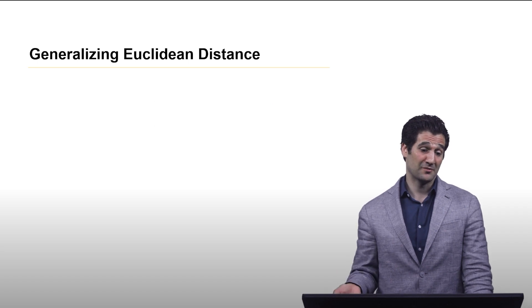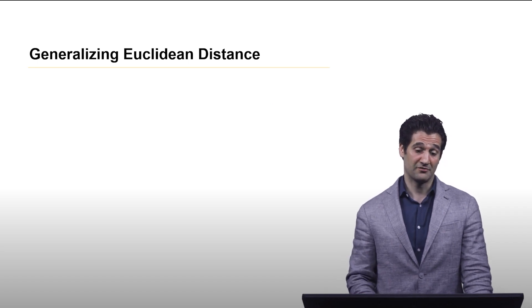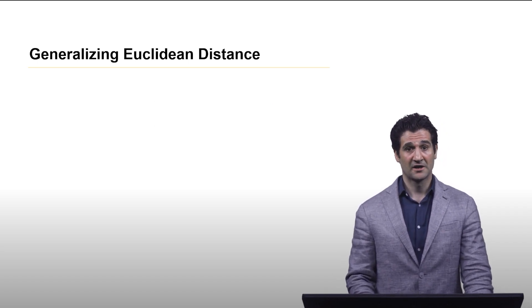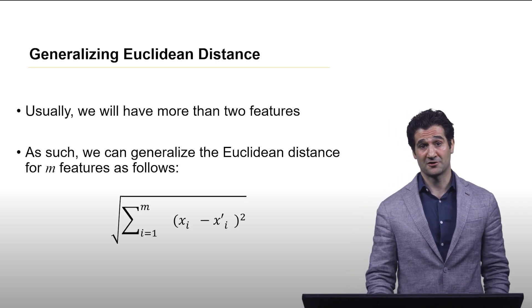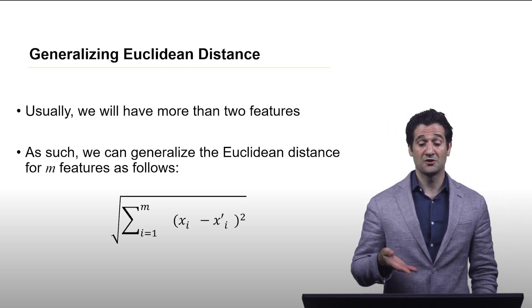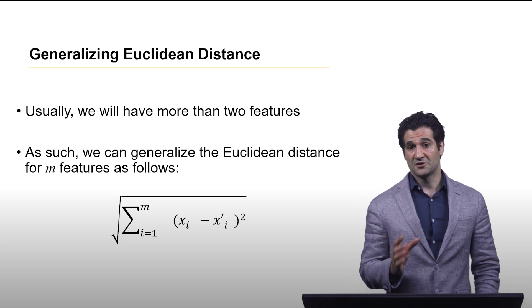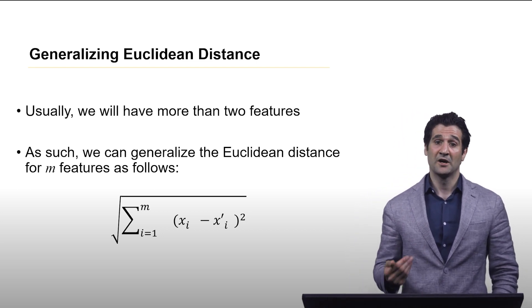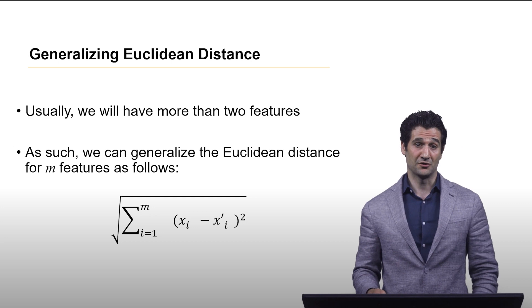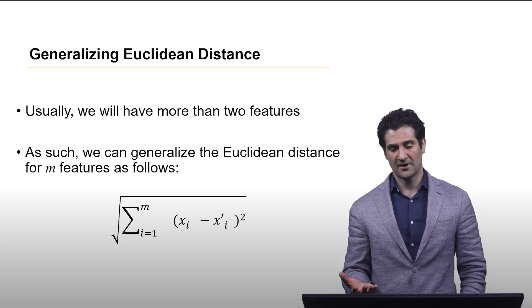We want to generalize this to be able to use it for more than just two features. If you have m features and you want to use Euclidean distance, you're still using Pythagorean theorem - you're just summing up more than two dimensions. You're still finding the square of the difference and you're still taking the square root of the whole thing.